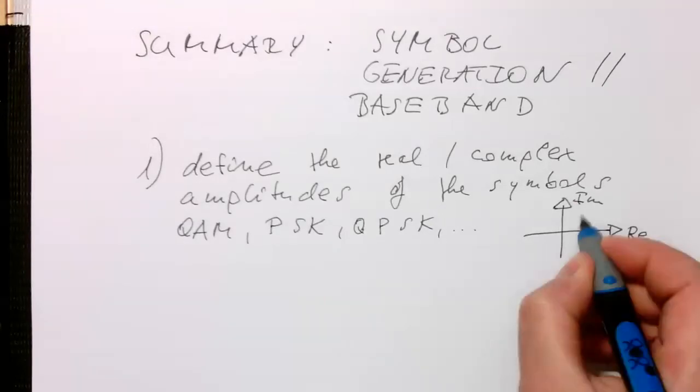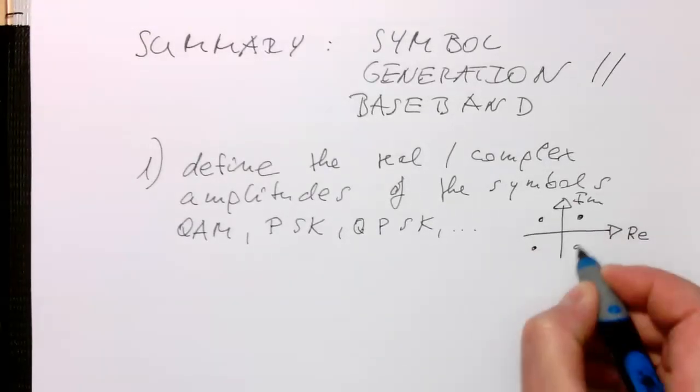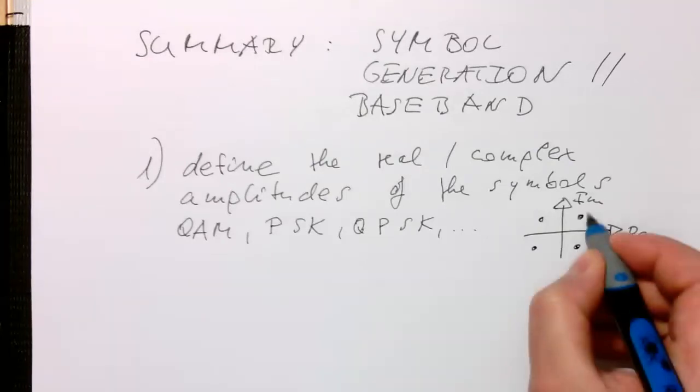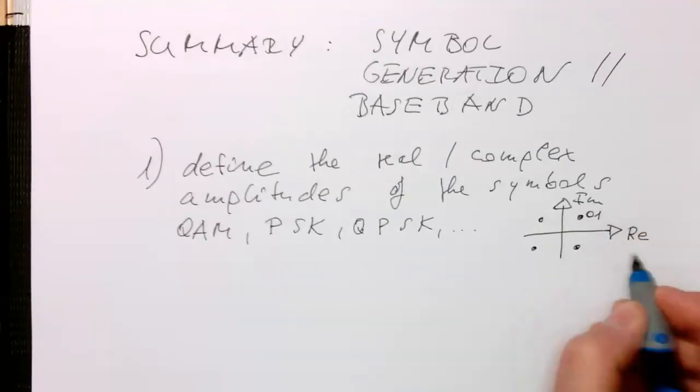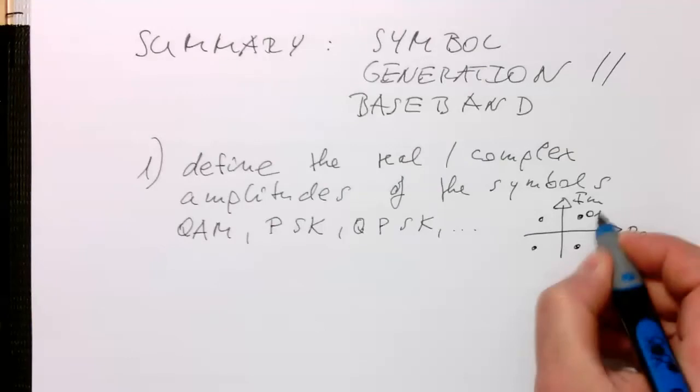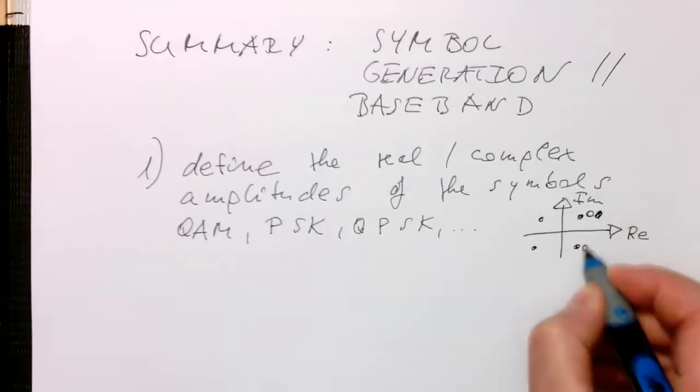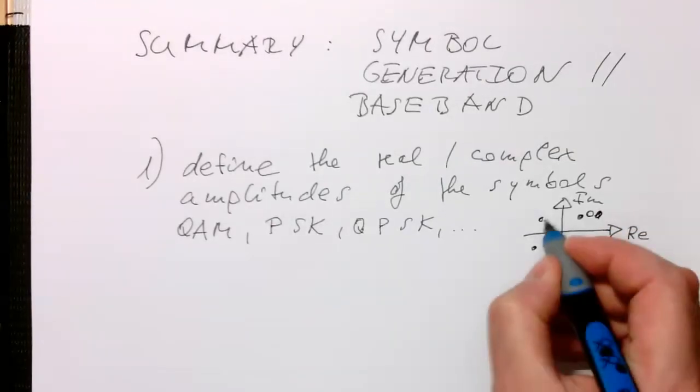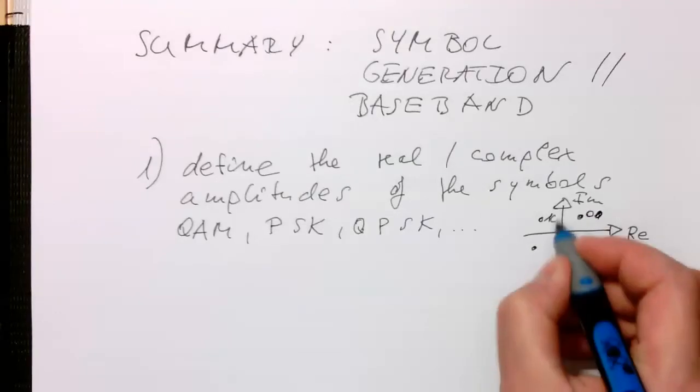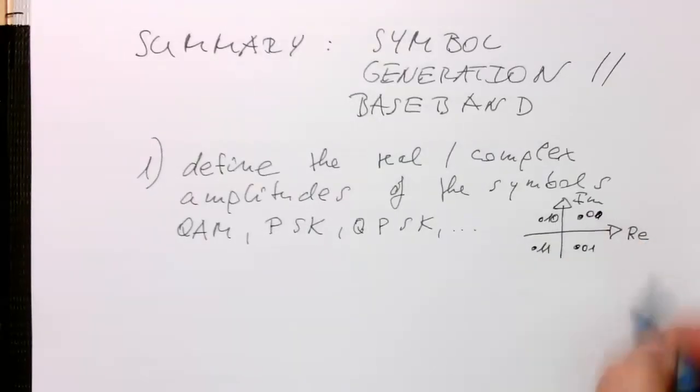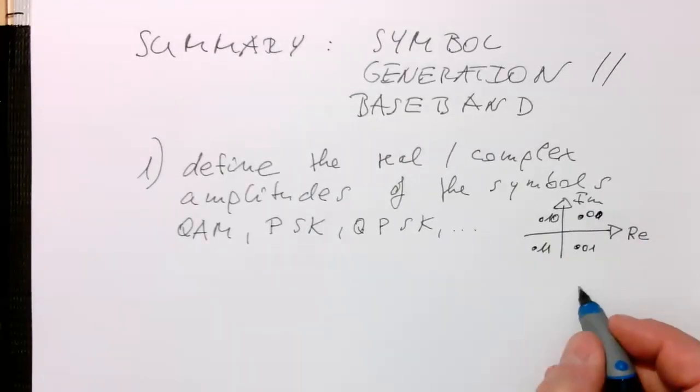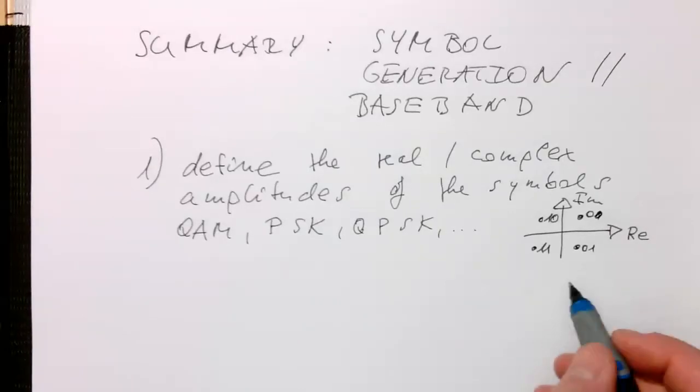We need to define where these amplitudes lie for different binary codes. For example, 00, 01, what we have done with QAM, and then coding this appropriately. That's defining the different amplitudes.